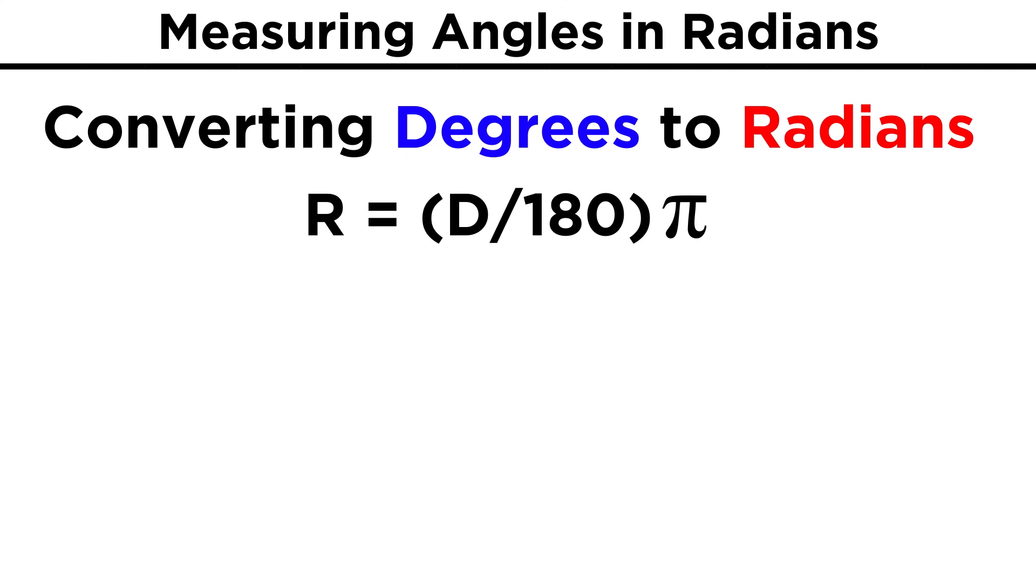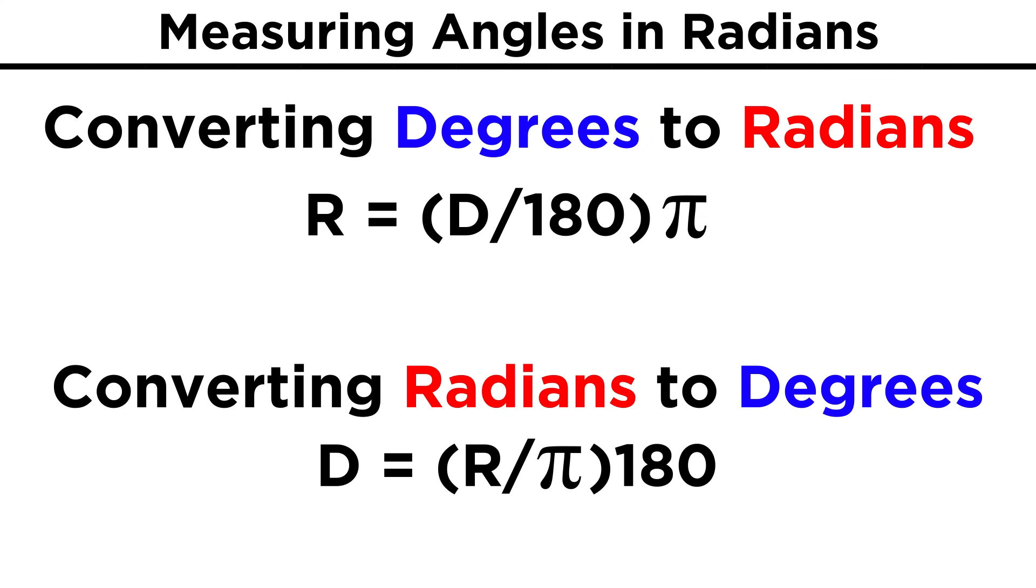In general, to convert between degrees and radians, we can take a value in degrees, divide by 180, and multiply by π, or we could take a value in radians, divide by π, and multiply by 180.